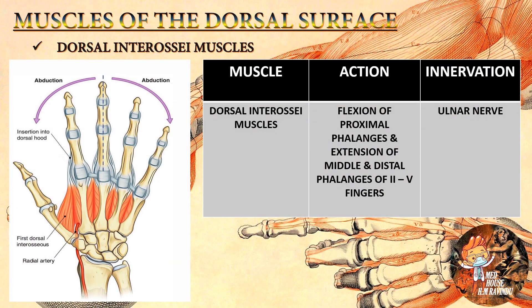Now we are going to talk about the muscles of the dorsal surface. The dorsal interossei muscle action is flexion of proximal phalanges and extension of middle and distal phalanges of second to fifth fingers, innervated by the ulnar nerve. Here you can see the dorsal interossei muscles.